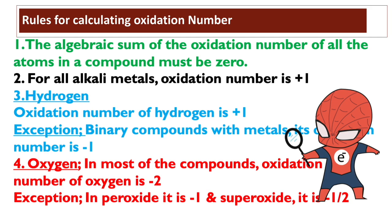To calculate the oxidation number, certain rules need to be followed. According to the rules, the sum of oxidation numbers of all atoms in a neutral molecule must be zero.